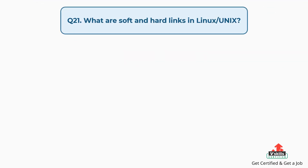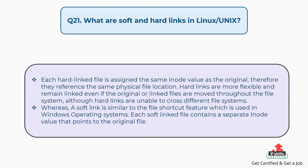Question number twenty-one: what are soft and hard links in Linux or Unix? Each hard linked file is assigned the same inode value as the original, therefore they reference the same physical file location. Hard links are more flexible and remain linked even if files are moved, although hard links are unable to cross different file systems. A soft link is similar to the file shortcut feature used in Windows; each soft linked file contains a separate inode value that points to the original file.